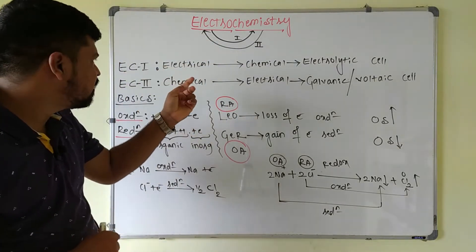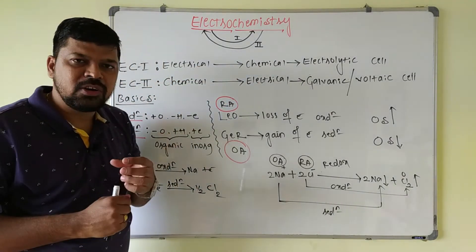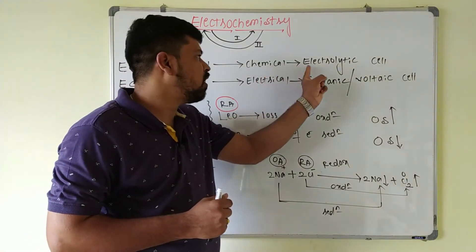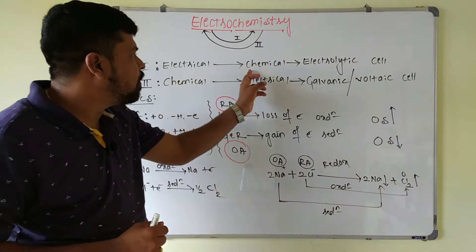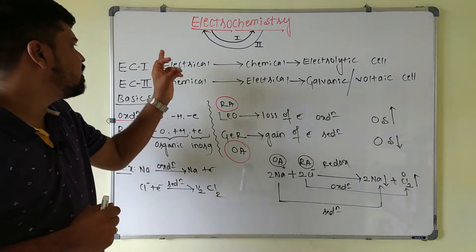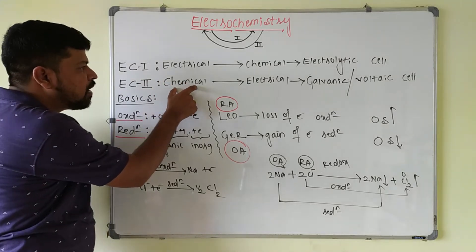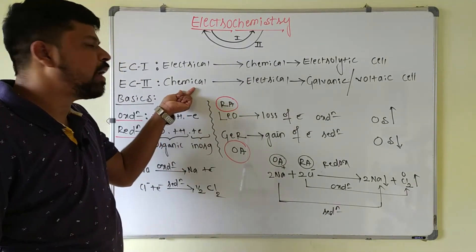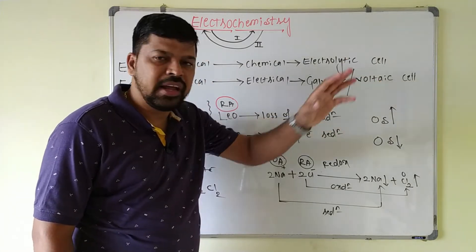Electrochemistry one deals with the conversion of electrical energy into chemical energy. The device or cell which converts electrical energy into chemical energy is called an electrolytic cell. By using some amount of current, we bring about chemical changes, so electrical energy is converted into chemical energy. In electrochemistry two, the device or cell which converts chemical energy into electrical energy is called a galvanic cell or voltaic cell.